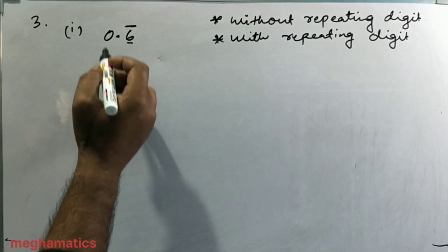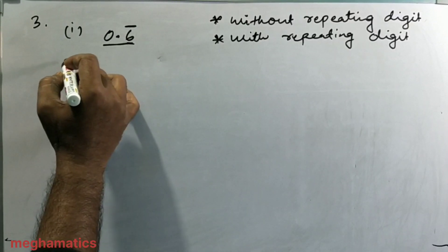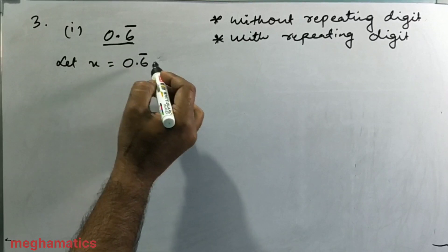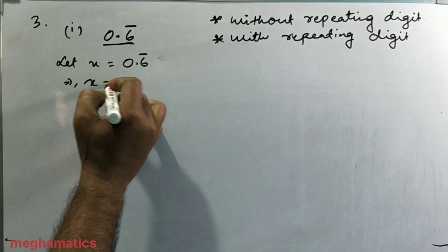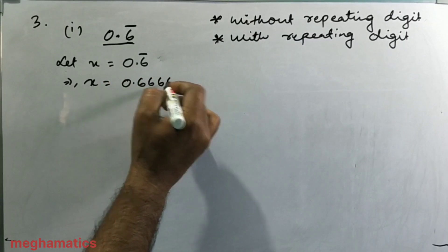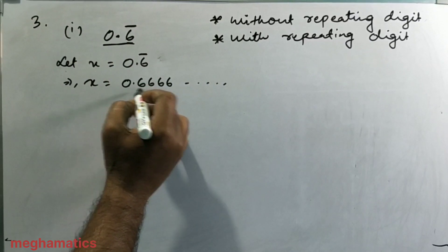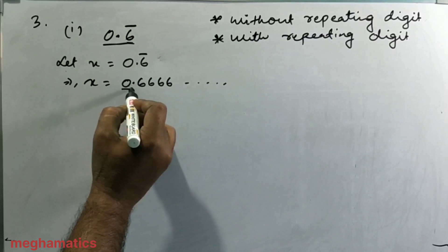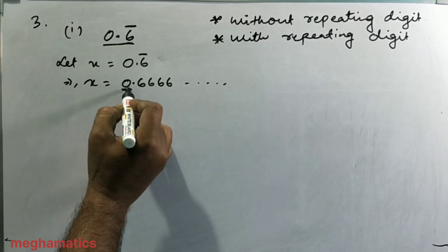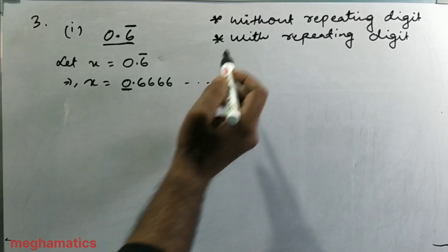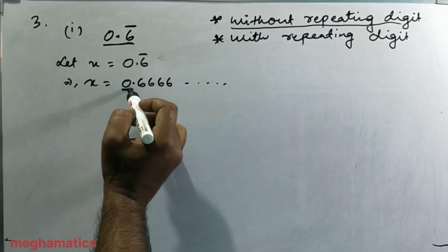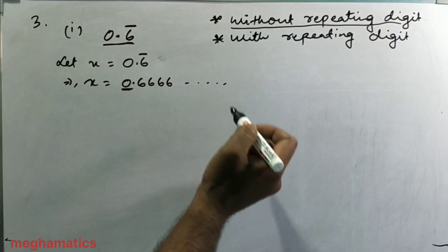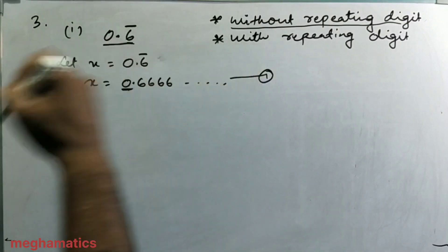To solve this, we let x equal 0.6 bar, which means x equals 0.6666... In the first equation, we look at the number before the decimal. Since the digit before the decimal — which is 0 — is not repeating, the first condition is satisfied: the number before the decimal contains no repeating digit. So we take this as equation number one: x = 0.6666...